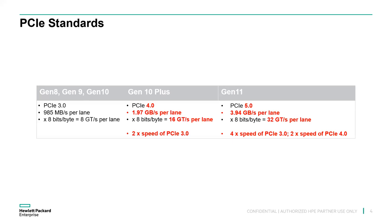That means transactions per lane went from 8 billion, to 16 billion, to now 32 billion per second per PCIe lane on Gen 11. The PCIe bus connecting all our peripherals is now providing far more bandwidth than just a few years ago. The easy way to remember it: Gen 10 Plus is double the speed of Gen 10, and Gen 11 is double the speed of Gen 10 Plus for PCIe.